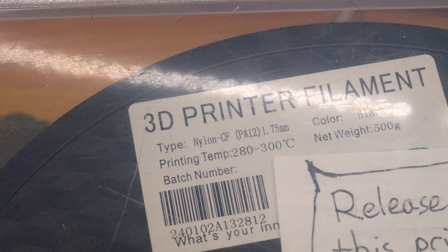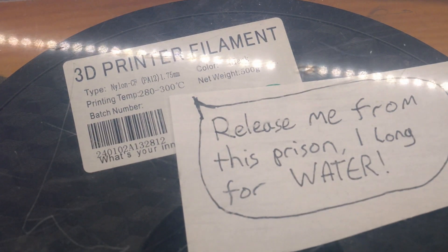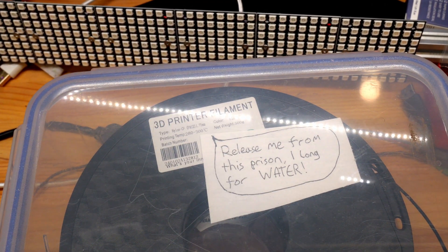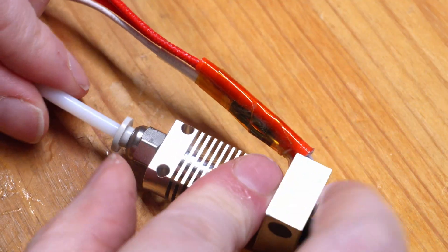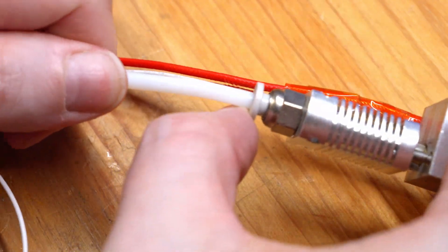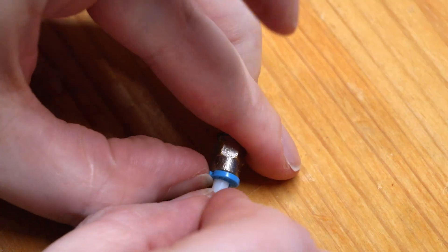I wanted a way of moving filaments around that kept things airtight so I could print things like nylon without worry, but I don't like using the PC4 tube connectors. Fine for mostly permanent connections, but I find attaching them so frustrating. I hate these jerks, get out of here!